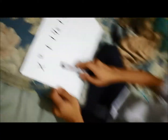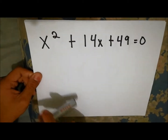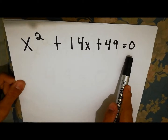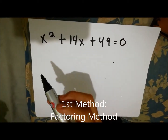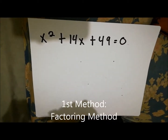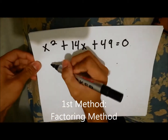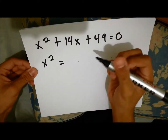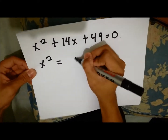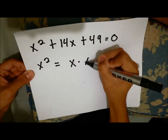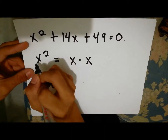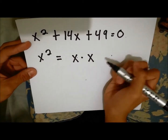So this is our problem: x squared plus 14x plus 49 equals zero. We must first find the factors of the first and the last term. The first term is x squared. The factors of x squared is only x multiplied by x, and when multiplying the two, we produce x squared — x times x.